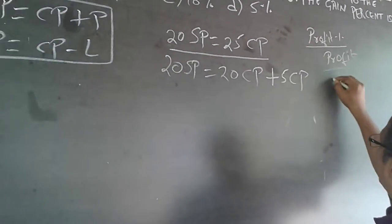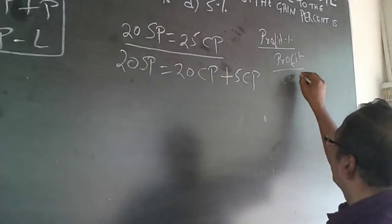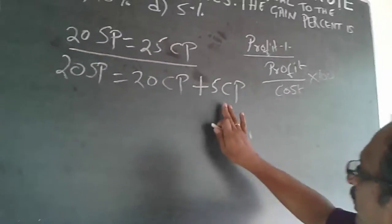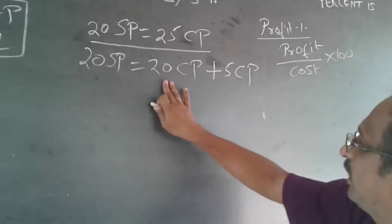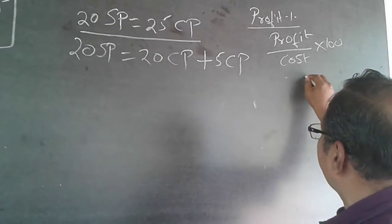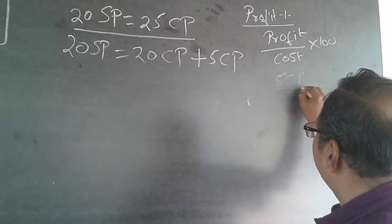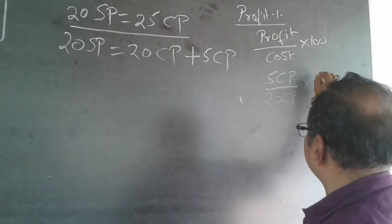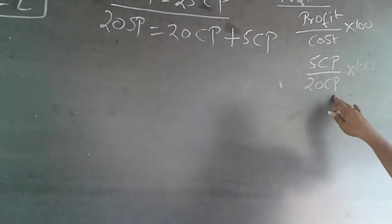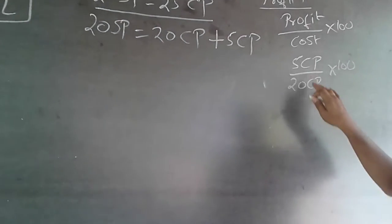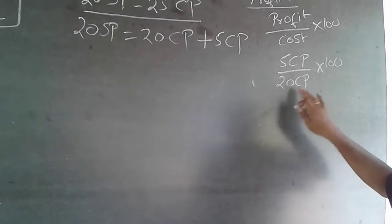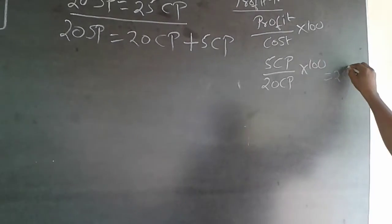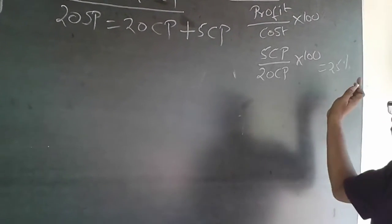Profit percentage equals profit divided by cost price, multiplied by 100. Here, profit is 5 CP and cost is 20 CP. So it becomes 5 CP divided by 20 CP, multiplied by 100. The CP cancels, and 5 divided by 20 gives us 100 divided by 4, which equals 25% profit.